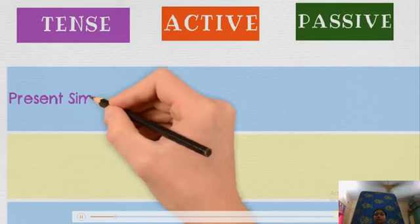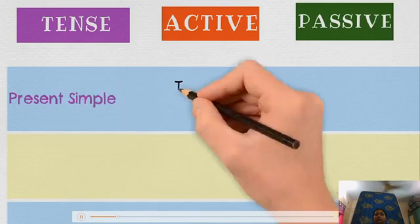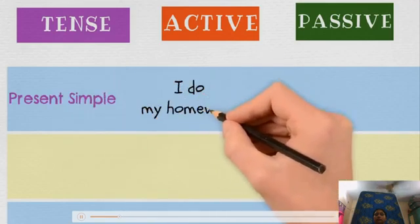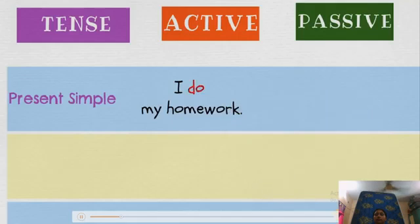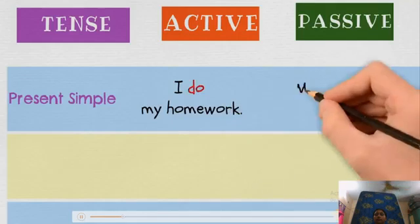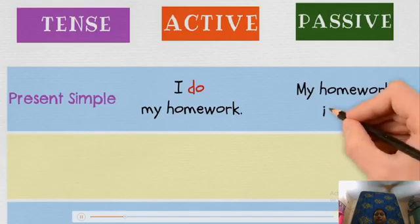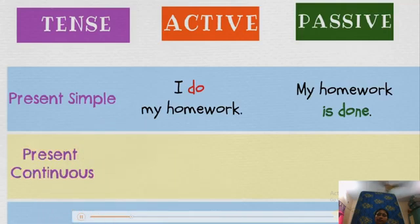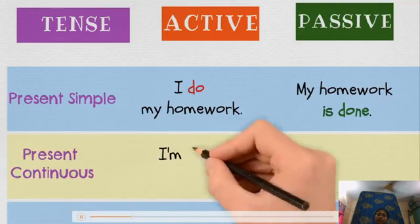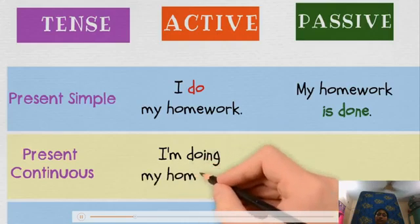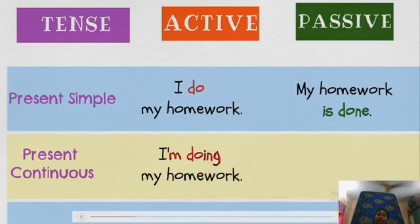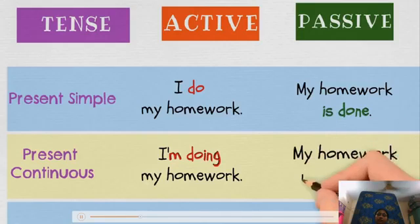Present simple — Active: I do my homework. Passive: My homework is done. Present continuous — Active: I'm doing my homework. Passive: My homework is being done.